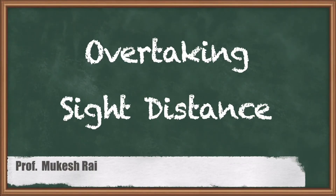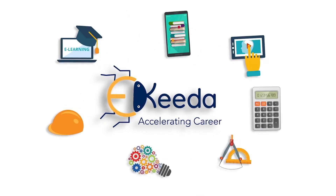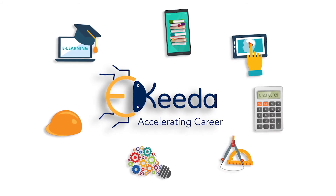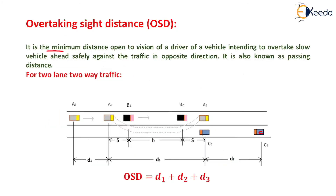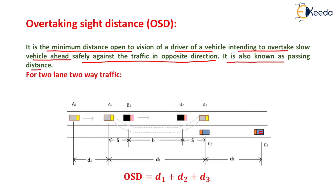Hello students, today we are going to study overtaking sight distance. It is the minimum distance open to the vision of a driver of a vehicle intending to overtake a slow vehicle ahead safely against traffic in the opposite direction. It is also known as passing distance.